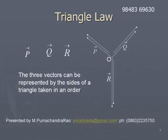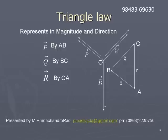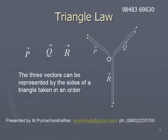Let us see how to represent them. Let us take p bar represented by AB. p bar is represented both in magnitude and direction by vector AB, q bar is represented both in magnitude and direction by BC, and r bar is represented both in magnitude and direction by CA. Then these three vectors AB, BC, CA constitute and complete a triangle ABC.